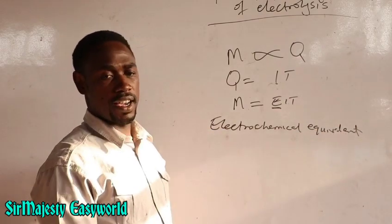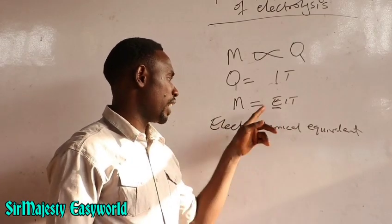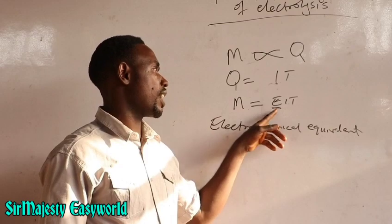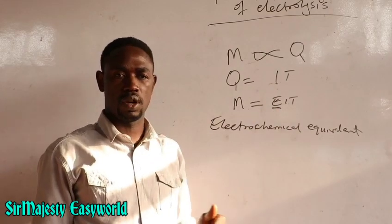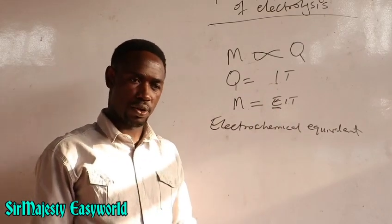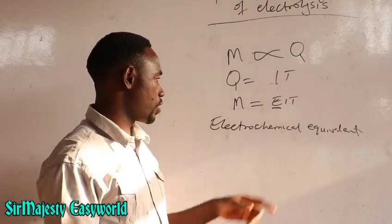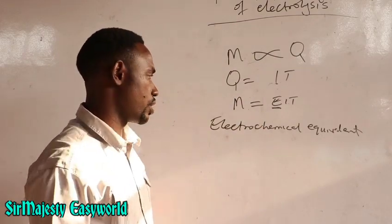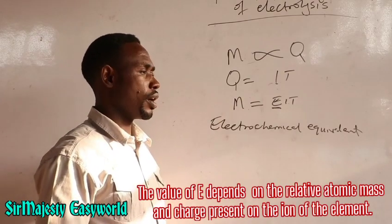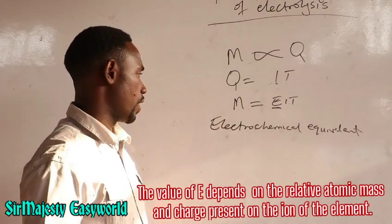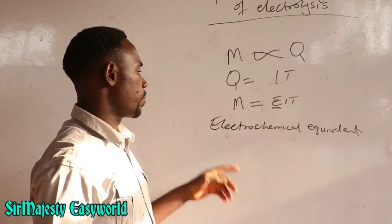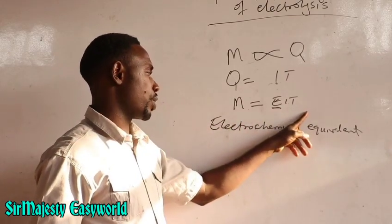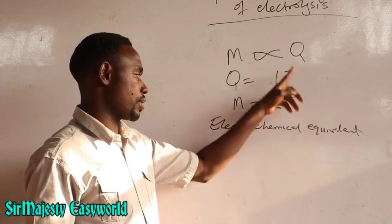If you are able to find the value of E for any element, this is a constant — but unlike other universal constants, it varies with each element. For example, copper has its own electrochemical equivalent, sodium has its own, zinc has its own, depending on the relative atomic mass of each element. From the definition of E, if you apply it directly, you will solve every question involving mass under the First Faraday Law.